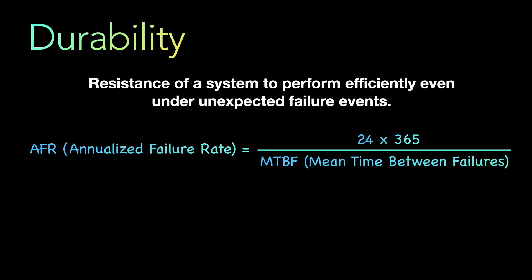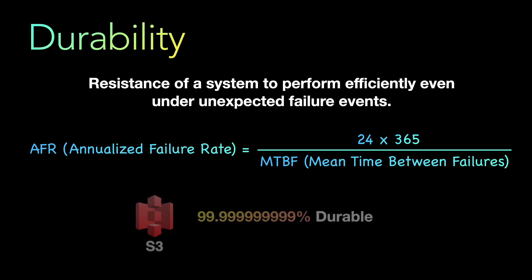A famous example of durability is Amazon S3 — Amazon's Simple Storage Service. S3 has a durability of 99.999999999% — that's eleven nines. This corresponds to an average expected annual loss of 0.000000001% of objects. In practical terms, if you store 10,000 objects on Amazon S3, you can expect to lose one object once every 10 million years.